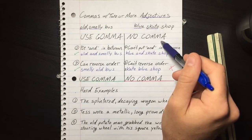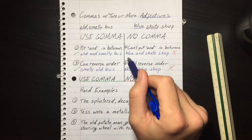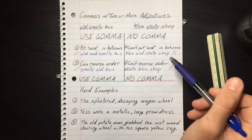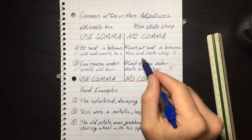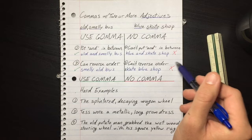Don't put a comma in between the adjectives if you cannot put 'and' in between them. The blue and skate shop - what is that? Is that a blue shop that is also a skate shop? What's a blue shop?